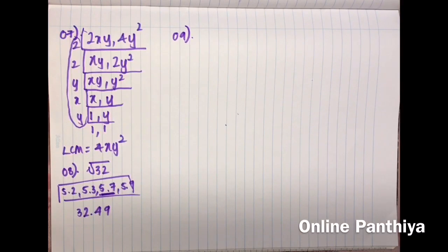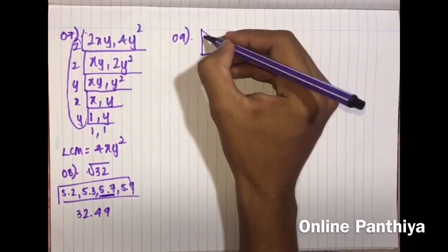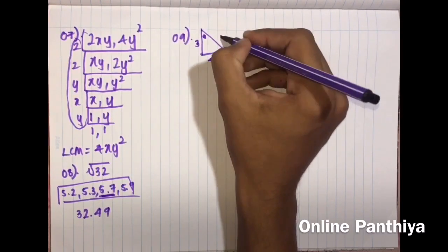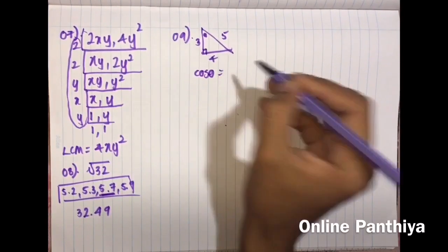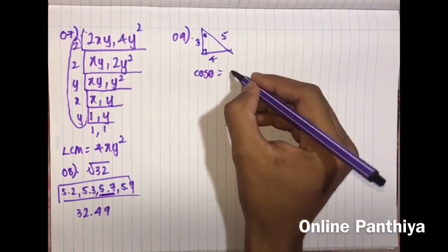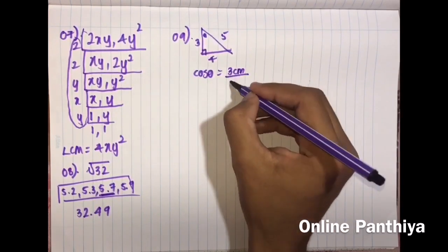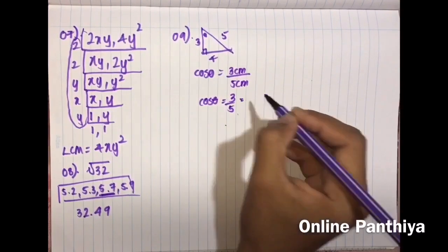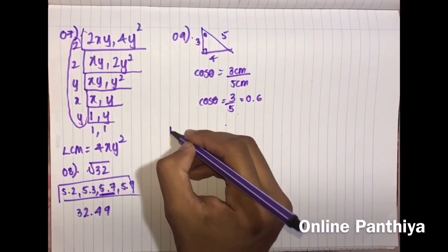Question 9: Find the value of cos θ using the diagram given. The sides are: adjacent = 3, opposite = 4, and hypotenuse = 5. Cos θ equals adjacent over hypotenuse. So cos θ equals 3 over 5, which simplifies to 0.6.